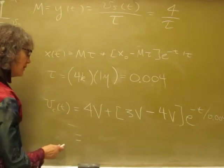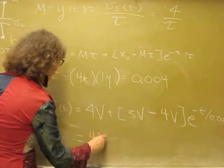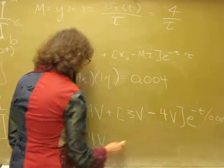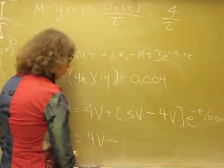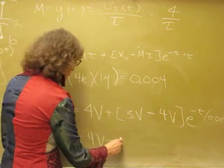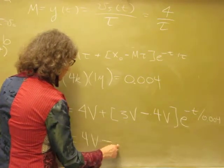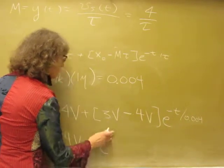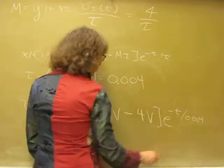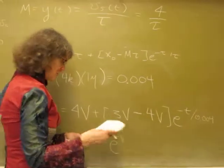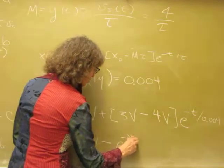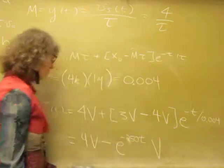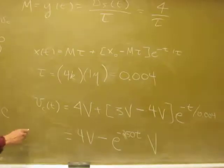So we've got 4 volts, and 3 minus 4 is minus 1, so this becomes 4 minus e to the minus T over 0.004. One over 0.004 is actually 250, so the final answer is 4 minus e to the minus 250T volts.